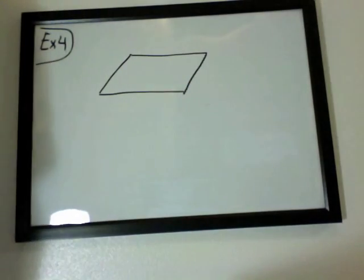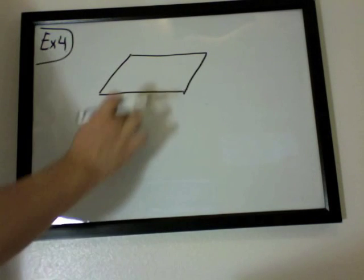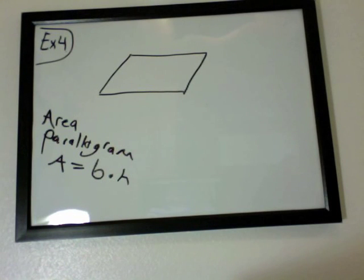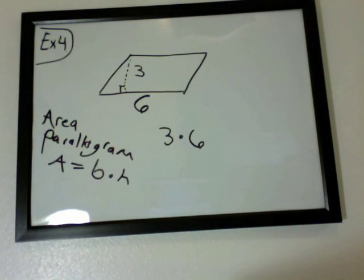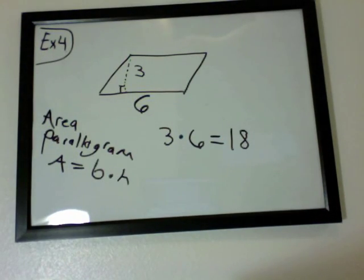In example number 4, parallelograms. Very similar to rectangles. Now with the parallelograms, this side and this side will be the same, and this side and this side will be the same. Now the area formula would be base times height. Now we know the base of this is 6, the height is 3. So you just do the base times the height. 3 times 6 is 18. So 18 would be the area of this parallelogram.